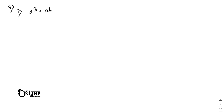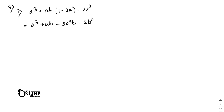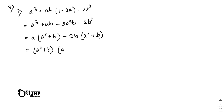Sum 9.1: a³ + ab(1 - 2a) - 2b². Expand: a³ + ab - 2a²b - 2b². From the first two terms a³ + ab, common a gives a(a² + b). From the next two, common minus 2b gives minus 2b(a² + b). So the answer is (a² + b)(a - 2b).